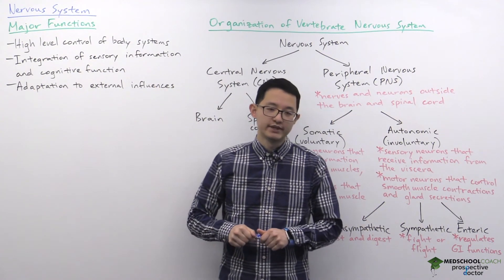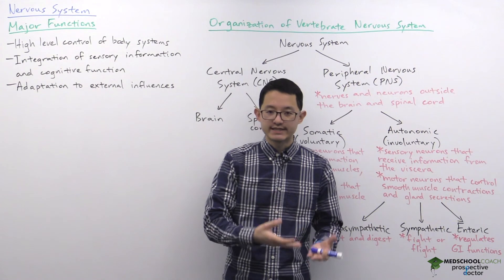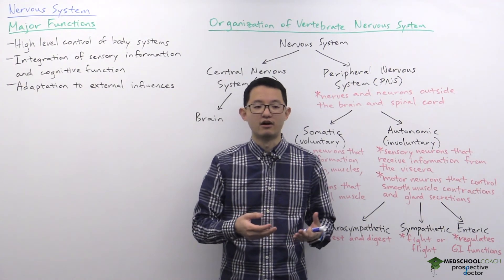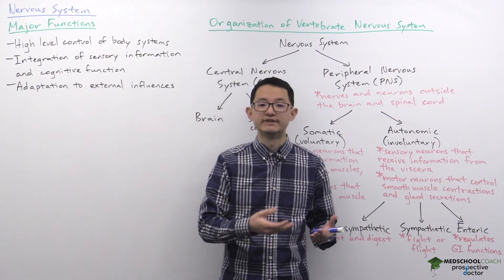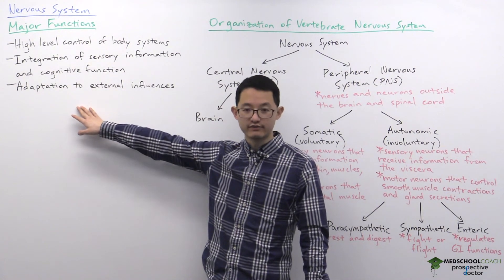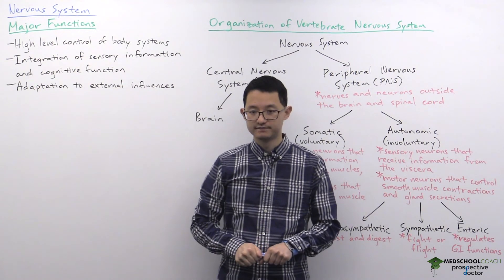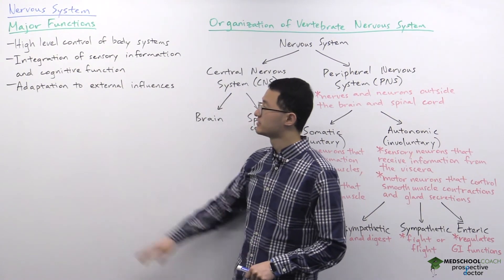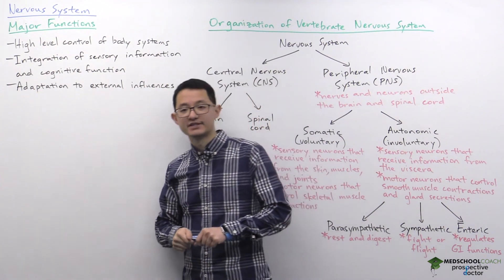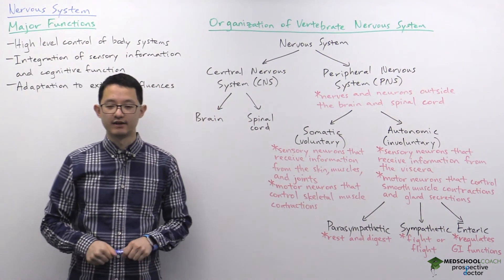Another example would be if you eat a food that makes you sick — the next time you see that food, you probably aren't going to want to eat it. That's another form of the way the nervous system allows the body to adapt. Now that we've considered the major functions of the nervous system, let's look at the organization of the vertebrate nervous system.